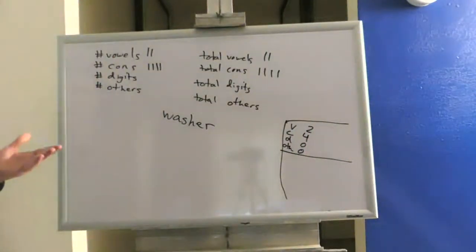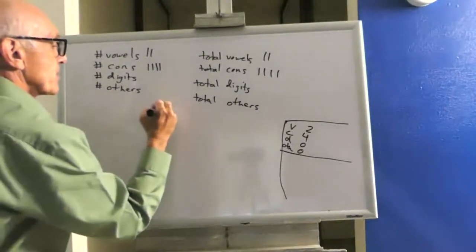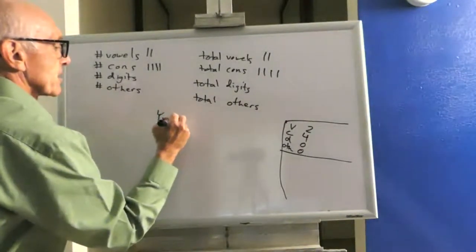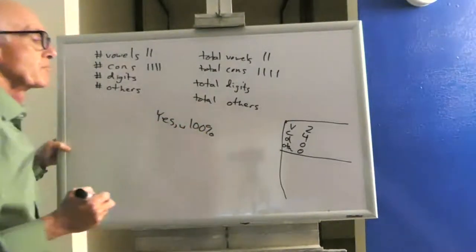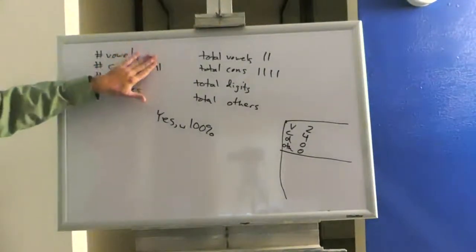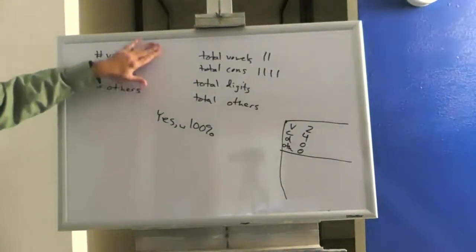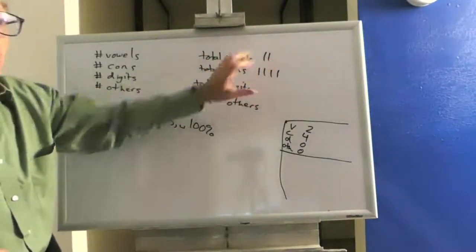Now I ask the user if they want another sentence. And they say yeah, they do. And they type in the sentence, yes comma space 100%. Because this is a new sentence, I'm going to wipe out these totals, but not the totals for all the sentences. They stay where they are.